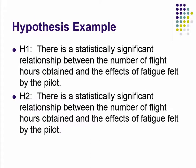These are all important elements to consider when writing your hypothesis because it needs to be measurable. An example: 'There is a statistically significant relationship between the number of flight hours obtained and the effects of fatigue felt by the pilot.' You might note that it's not really important that you use the word 'significant' — you can if you want to, but it's not necessarily required. Hypothesis 2: 'There is a statistically significant relationship between the number of flight hours obtained and the effects of fatigue felt by the pilot.' So it talks about your variables — flight hours, fatigue, which would be human factors possibly — and the relationship between the two. This is very measurable; you can see by reading it.